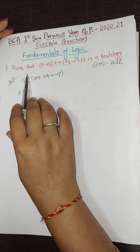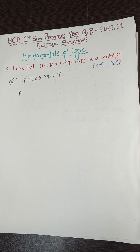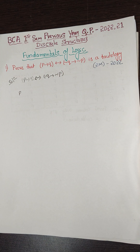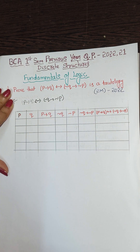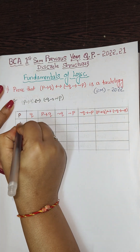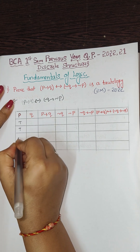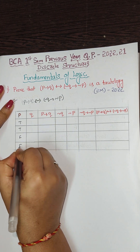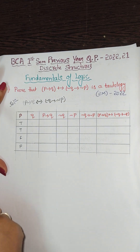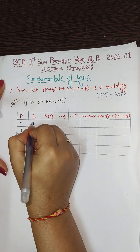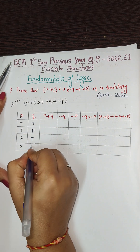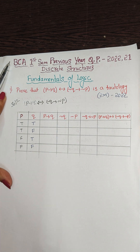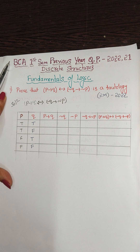There are only two propositions, so we have to set up the table. For p, we write two times true and two times false. For q, we write alternative true, false, true, false. Next we compute the conditional statement p→q.